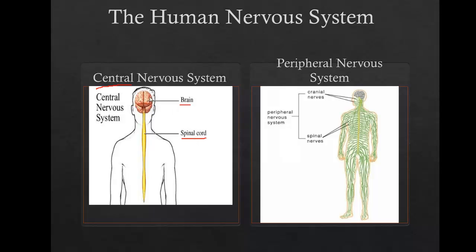The central nervous system is responsible for thinking and high order functions. The spinal cord is responsible for reflexes and things like that. The peripheral nervous system is all the nerves that are not in the center of your body. It is primarily responsible for sensory functions — taking in senses like feel and taste — and also motor functions, allowing your body to move.